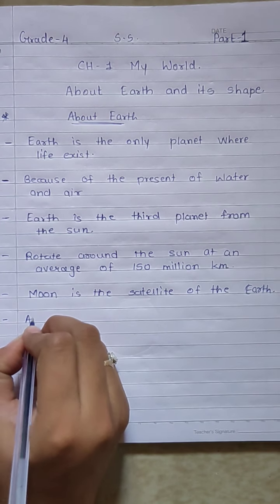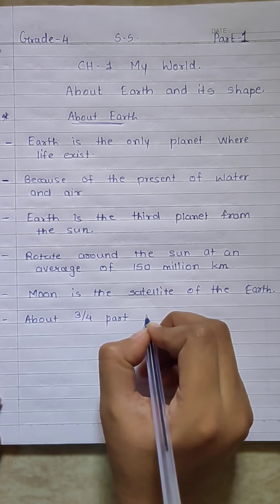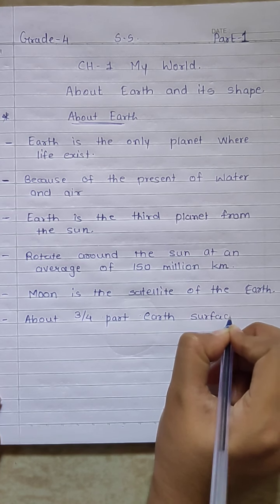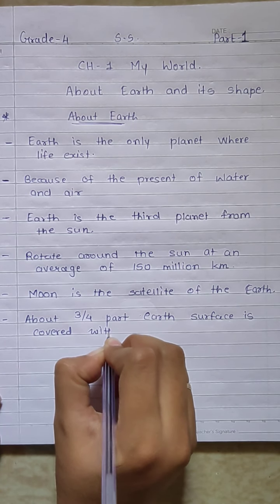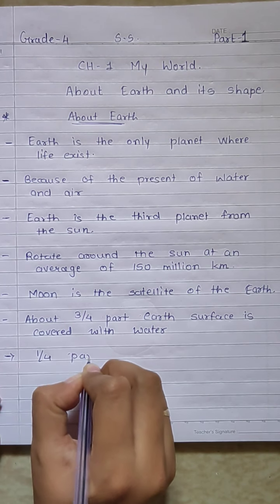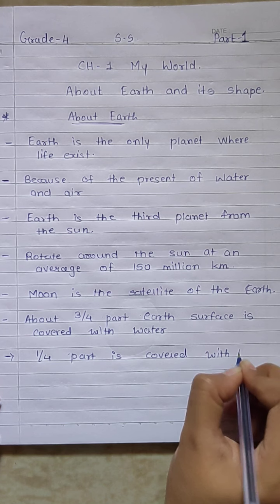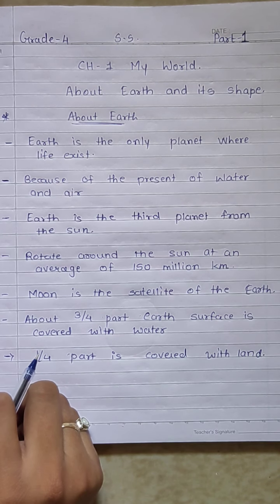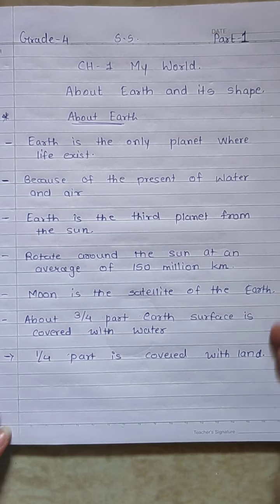Then, next is about three-fourth part. Earth's surface is covered with water and one-fourth part is covered with land. So because of this, life supports on earth. So this is all about the earth.